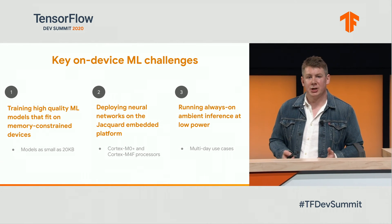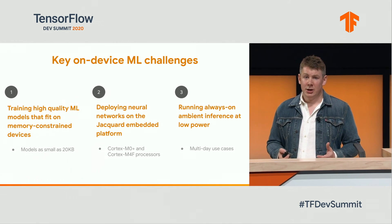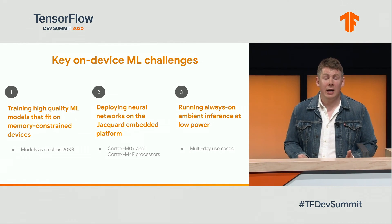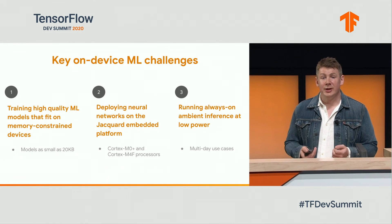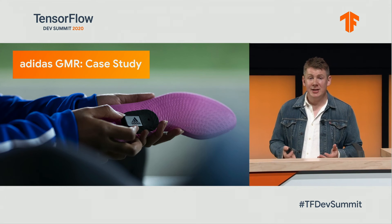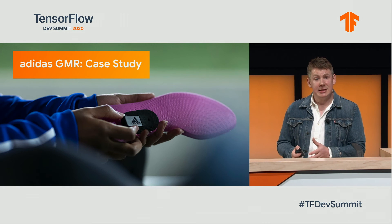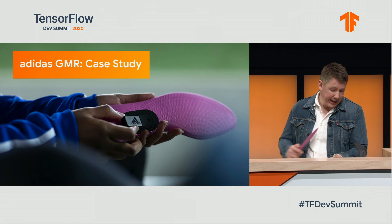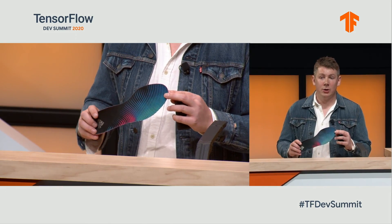To show how we've addressed these challenges, I'm going to walk you through a specific case study for one of our most recent products — so recent that it actually launched yesterday. The latest Jacquard-enabled product is called Gamer, built in collaboration between Google, Adidas, and the EA Sports FIFA mobile team. With Gamer, you can insert the same tag that's in your jacket into an Adidas insole and go out in the world and play soccer.